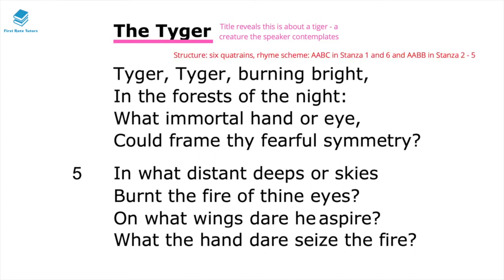In terms of the structure of this poem, it's written in six quatrains — a quatrain being a stanza or verse which has four lines. It has a very specific rhyme scheme: in stanzas one and six it has an AABC rhyme scheme, and in stanzas two to five it has an AABB rhyme scheme.